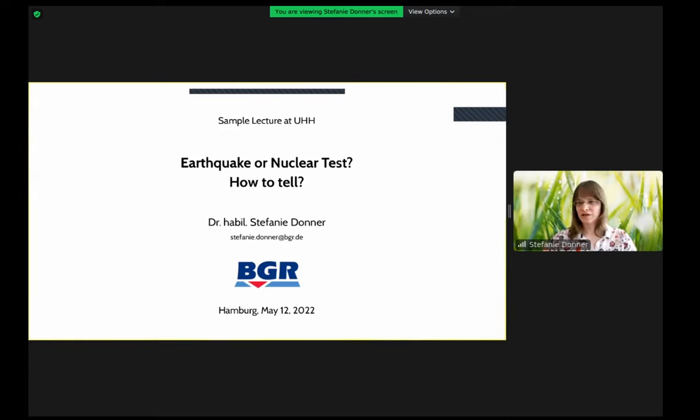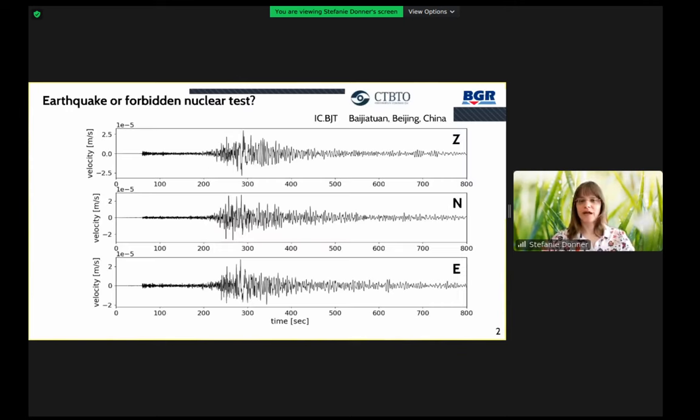Es ist schon ein bisschen angeklungen, ich würde mich selbst als klassische Observatoriums-Seismologin bezeichnen. Das bedeutet, dass ich wirklich noch mit Wiggles arbeite und nicht so wie Selene mit den Wiggles vom Hintergrundrauschen, sondern tatsächlich Wiggles von echten Ereignissen. Und mit dem Hintergrund des Comprehensive Test Ban Treaty oder Kernwaffen-Teststopp-Vertrages auf Deutsch, kompliziertes Wort, stellt sich oft genug die Frage, wenn man jetzt auf so eine Aufzeichnung schaut, was war es denn nun? Ein Erdbeben oder eben doch ein verbotener Nukleartest?